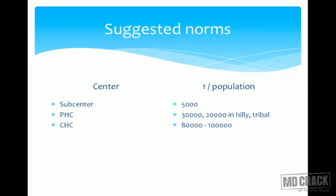The suggested norms for centers: one sub-center per 5000 population, one PHC per 30,000 population, or one PHC per 20,000 population in tribal, hilly, or difficult-to-access areas. One CHC per 80,000 to 1 lakh population. These numbers are expected to be known as they can be directly tested in examinations.